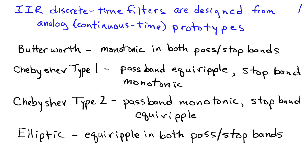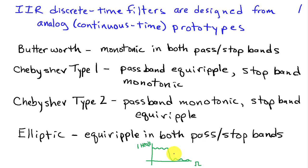The fourth category, the elliptic filter, has ripples in both the pass and stop bands. The advantage of allowing ripple is that it allows one to achieve a narrower transition band for a given filter order. The elliptic filter generally has the narrowest transition band, while the Butterworth has the widest. If one can tolerate ripple, it allows you to satisfy specifications with a lower order filter.